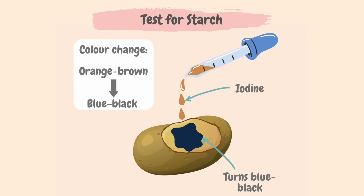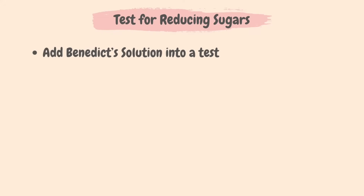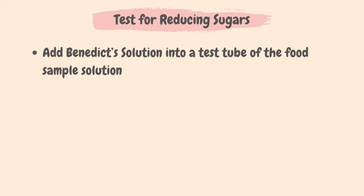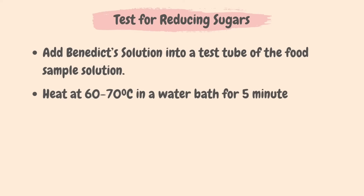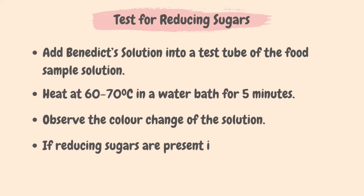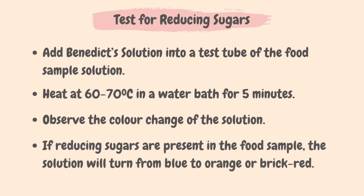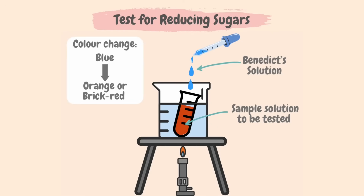The food test for reducing sugars: add Benedict's solution into the food sample solution in a test tube, then heat at 60 to 70 degrees Celsius in a water bath for five minutes. Take the test tube out and observe the color. If reducing sugars are present, the solution will turn from blue to orange or brick red, confirming a positive test.